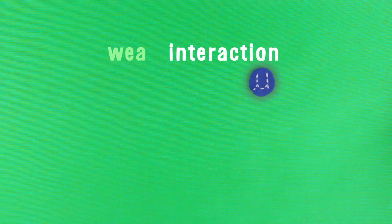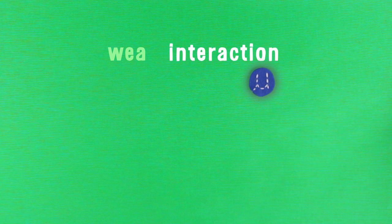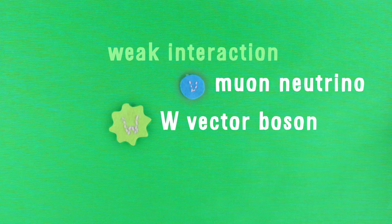It can take part in a weak interaction. That means it can turn into a muon neutrino and a W vector boson, which in turn could transform into an electron and a neutrino, both of which are stable. So that's the weak interaction.